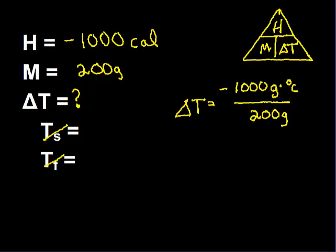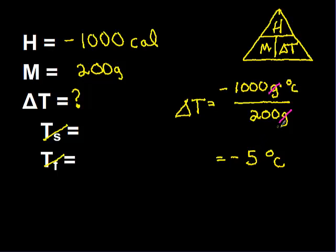I want to keep track of my units. I have grams degrees Celsius on top and grams on the bottom, so the grams cancel, leaving degrees Celsius. My answer will be in degrees Celsius. Taking 1,000 divided by 200 — and since heat is being lost, this is negative — I get negative 5 degrees Celsius. That's how I find my change in temperature.